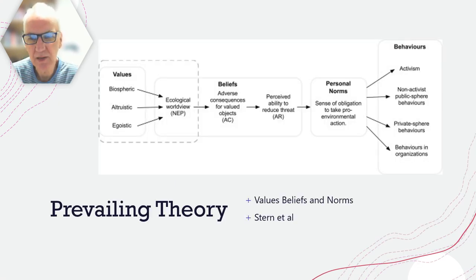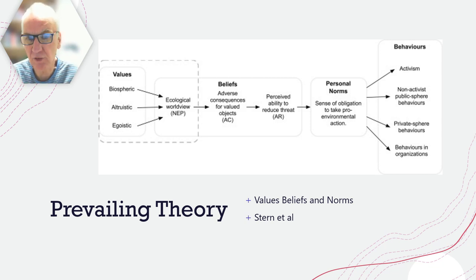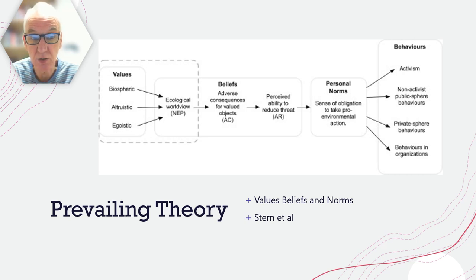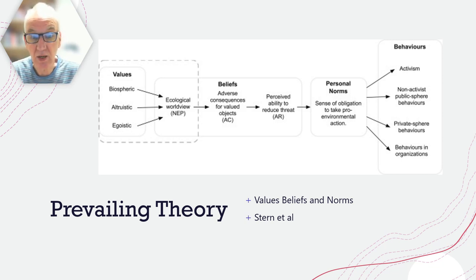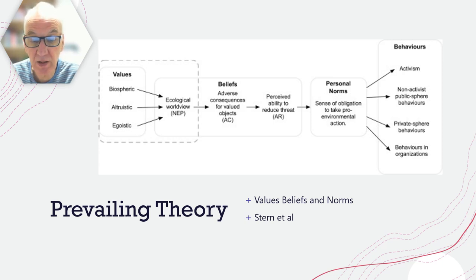The prevailing theory, certainly when we started our study and still very much the dominant theory, is the Value, Beliefs and Norms theory originated from Stern et al. Essentially, there are three components to the attitudes that could be present in any individual person: biospheric, altruistic, and egotistical. This creates an ecological worldview which leads to particular beliefs and norms and then into behaviours. That's the prevailing theory.